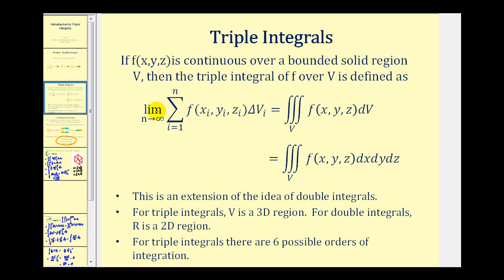For a triple integral, we have the limit as n approaches infinity of an infinite sum of f(x, y, z) times a change in volume rather than a change in area. This gives us a triple integral over a solid region V, where the differential dV can be expressed as dx dy dz or any other combination of these three differentials. A triple integral integrates over a three-dimensional region V, whereas a double integral integrates over a two-dimensional region R.